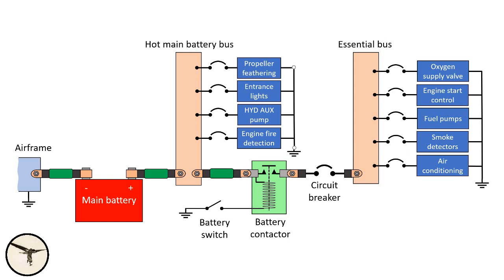Here is an example from the ATR. The negative terminal of the main battery is attached to the airframe. The positive terminal is attached to the hot main battery bus, which enables the attached systems to be powered when the battery switch is off. Each system has a circuit breaker, and the negative terminals are attached to the airframe. Next in the line is the battery contactor. It is activated when you select the battery switch on. The main battery will now power the essential bus and the systems attached to it.